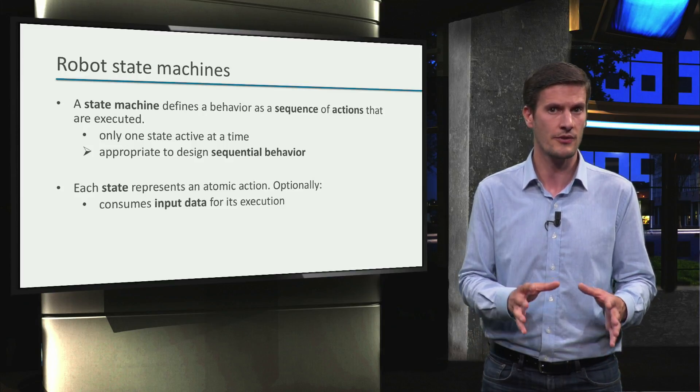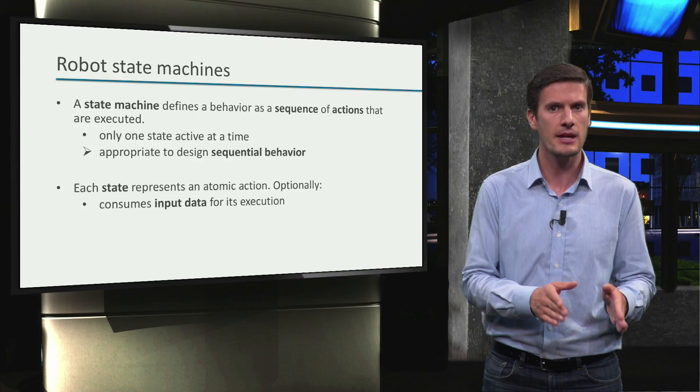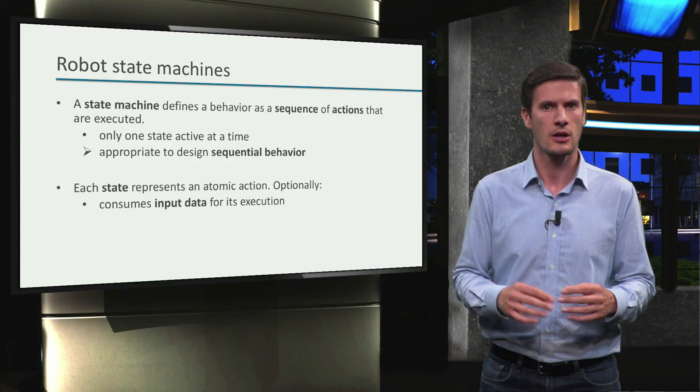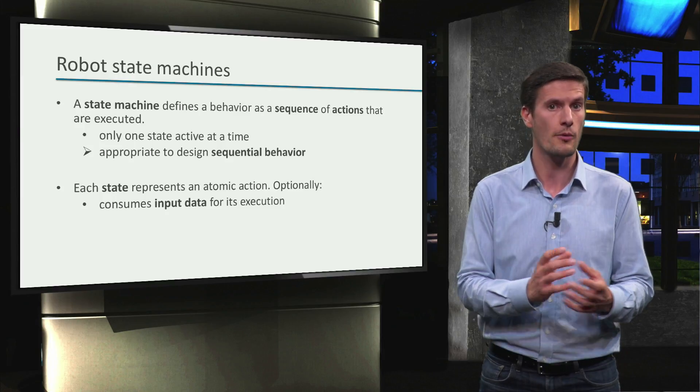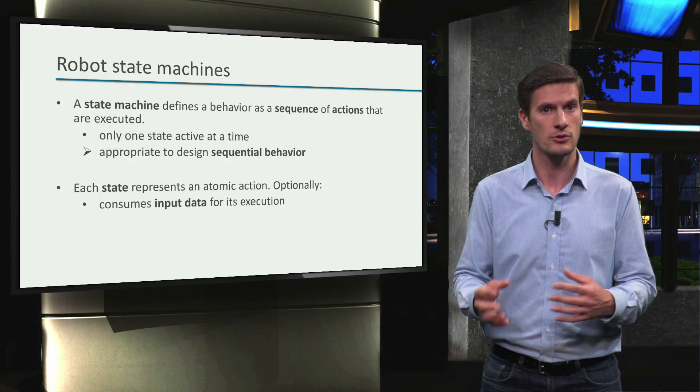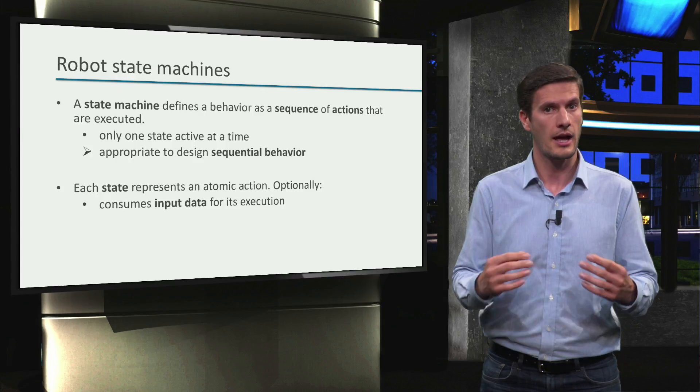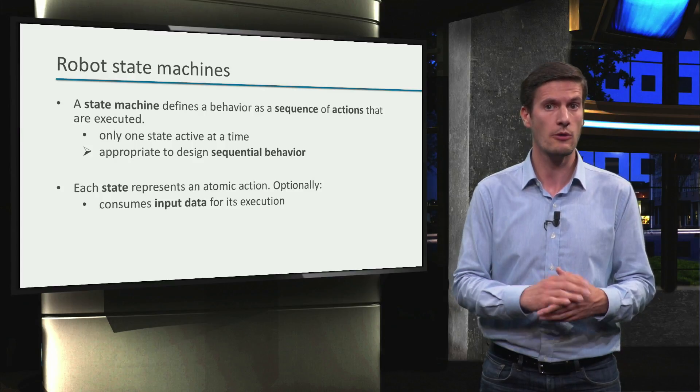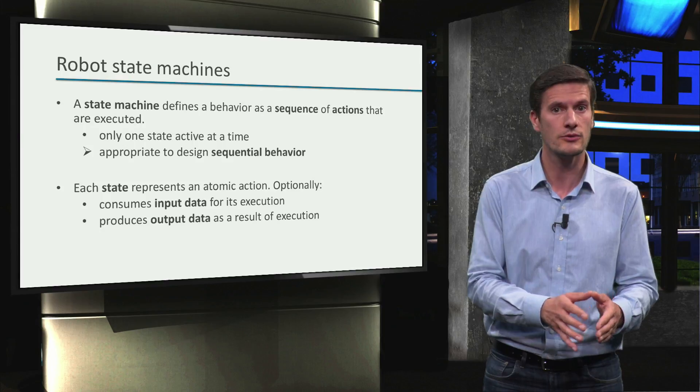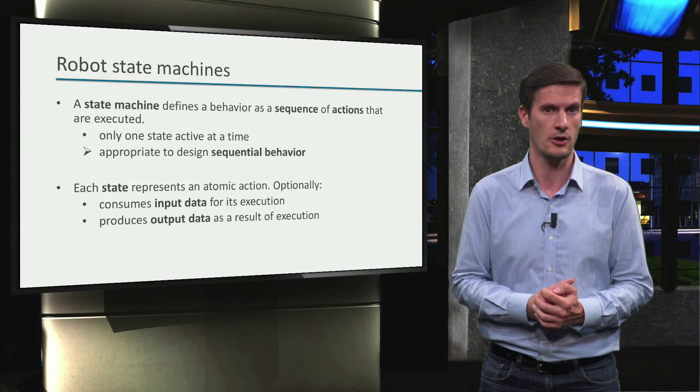Each state represents an atomic action in the robotic application. For the execution of the action, the state may consume input data. For example, compute the grasp requires an object pose. And as a result of its execution, a state may produce outcome data. For example, the joint values for the robot arm to grasp the object.